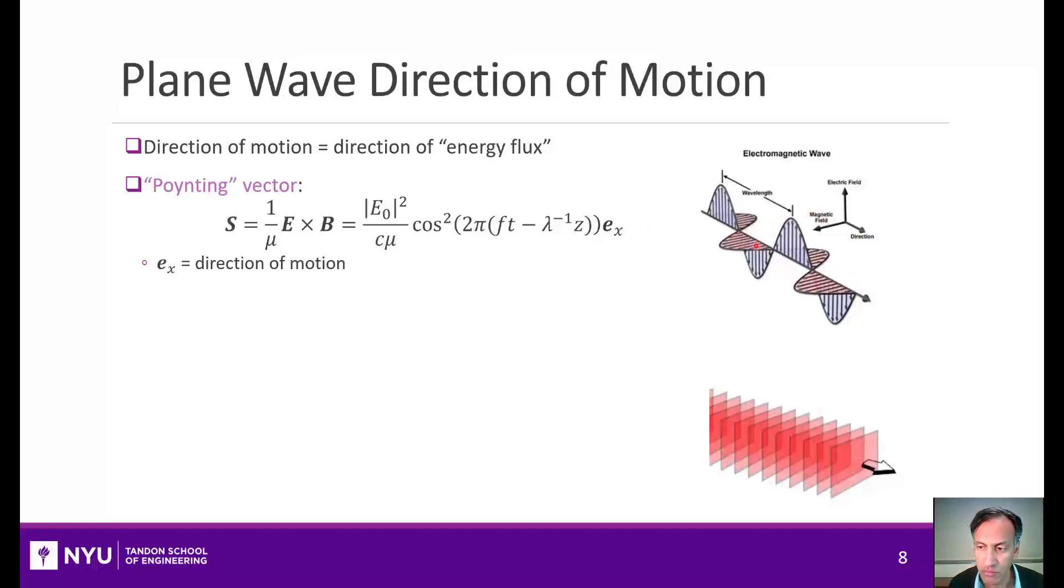It will be proportional to the electric field squared. The interpretation is that it represents the energy flux in the sense that if you look at any point, the divergence of this S field, this S value, is actually the energy consumed at that point. So, what it tells you is how much power can be transferred through any surface, if you like.